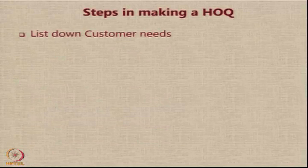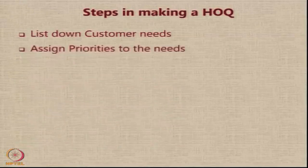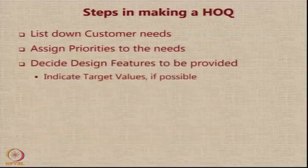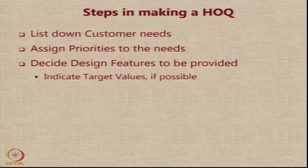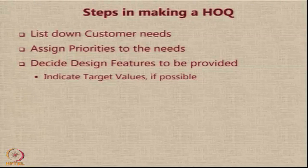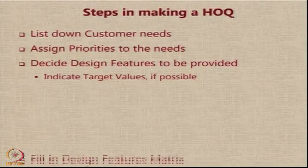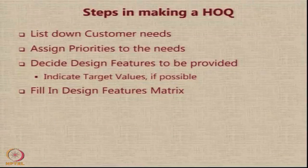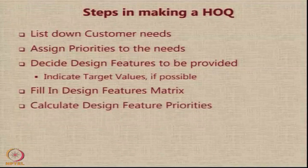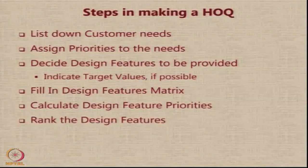First, we list down the various needs of the customer. Then we assign priorities to these needs — these priorities are normally specified by the customer. Then we decide what design features are to be provided to meet these requirements; these decisions come from either an understanding of the problem, consultation with experts, or past experience. If possible, we indicate target values for these features, because there is no point in exceeding those values as they do not give too much benefit — and many times these values can come from the competition. The next step is to fill in the design features matrix and then calculate the design feature priorities.